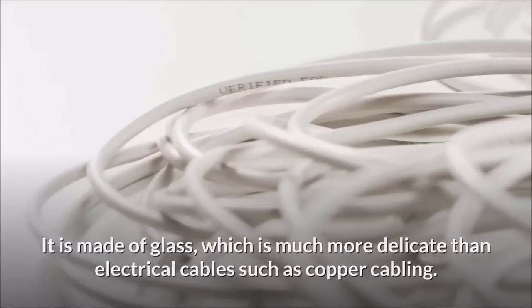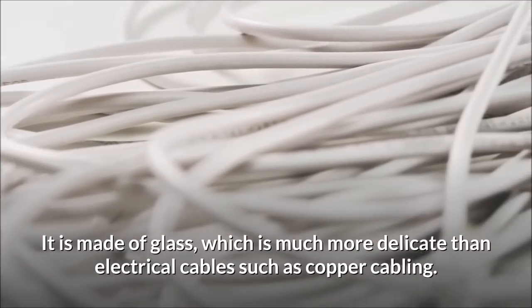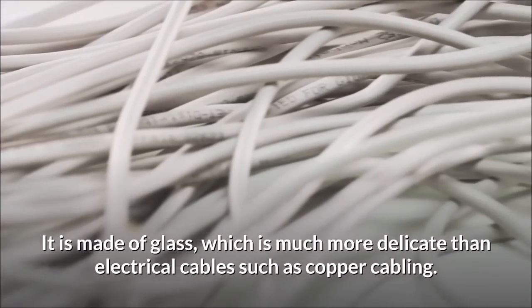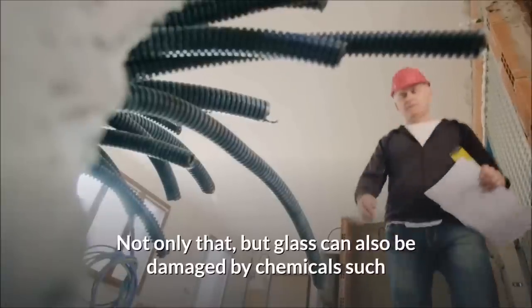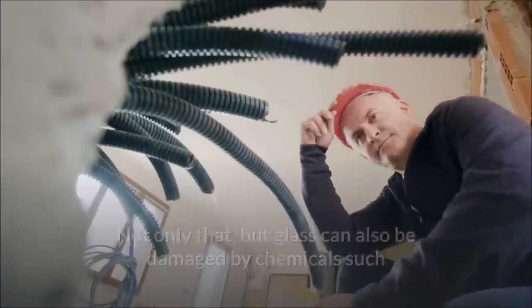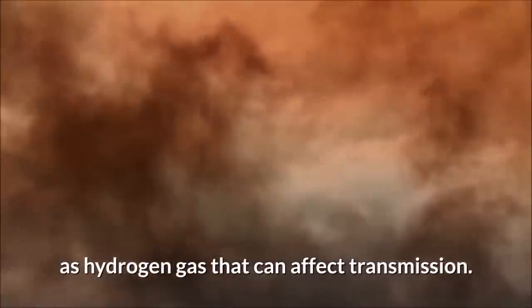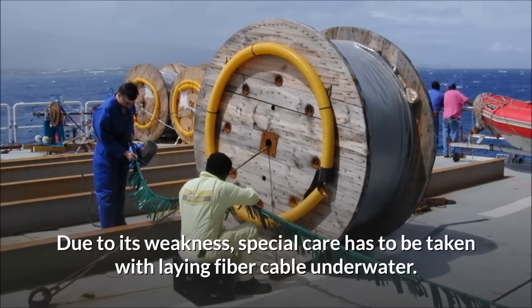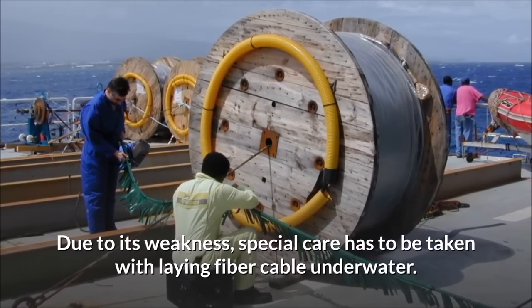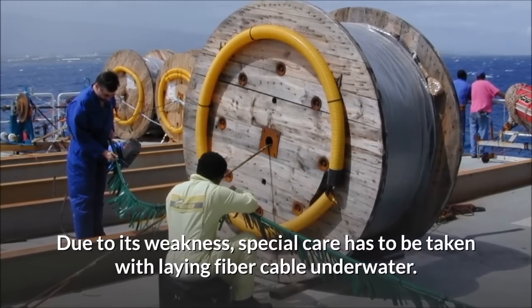Fragility. It is made of glass, which is much more delicate than electrical cables such as copper cabling. Not only that, but glass can also be damaged by chemicals such as hydrogen gas that can affect transmission. Due to its weakness, special care has to be taken with laying fiber cable underwater.